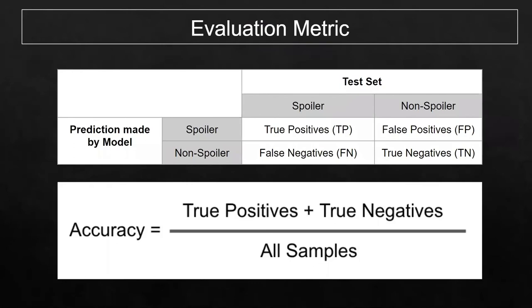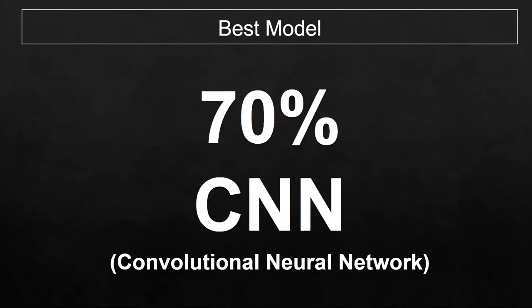Afterwards, accuracy is used to determine our best performing model. The accuracy is the ratio of all reviews correctly predicted against all reviews. Our best performing model is the convolutional neural network, which manages an accuracy of 70%. Considering reviews are textual information that are unstructured and noisy in nature, we are quite satisfied.